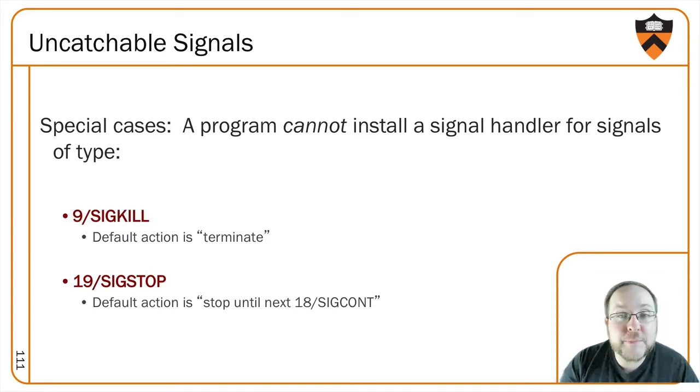So before we look at an example, I should mention that there are also some signals that the program may not install a handler for. And so there is no way to handle it in any different way than the default. One is SIGNAL 19, SIGSTOP. We saw this was used in conjunction with SIGCONT to suspend and resume a process's execution respectively. The other that cannot be handled is SIGNAL 9, SIGKILL, which is why you'll sometimes hear kill minus nine used as a verb, since it's a way the shell can kill off a process and be pretty darn sure that process will in fact terminate, since after all there's no way for a program to handle that signal.